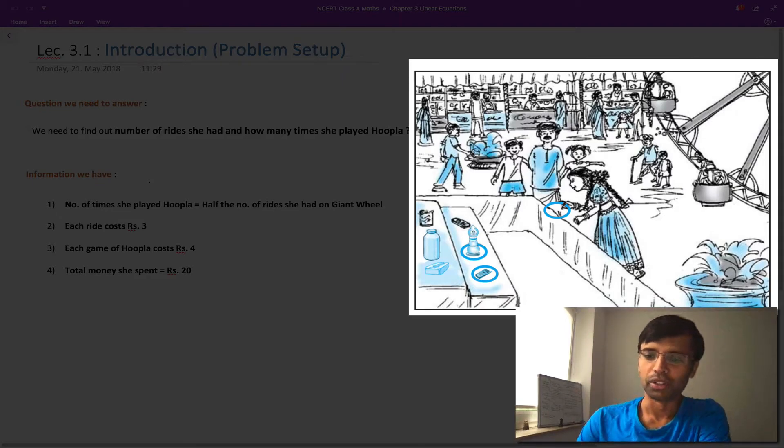You enjoy the whole day, go back, and then start to talk among yourselves about what you did all day. Your mom asked your elder sister, how many rides did you have on the giant wheel and how many hoopla games did you play? Your sister says, after so many rides I forgot exactly how many rides I had and how many games I played. But the thing I remember is the number of times I played hoopla was half the number of times I played the ride. So she enjoyed the rides more than playing hoopla.